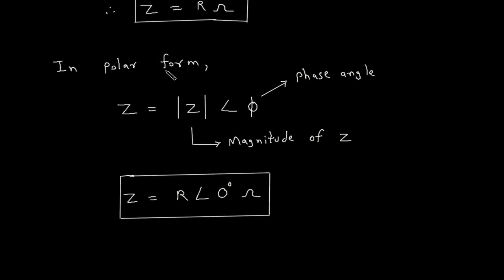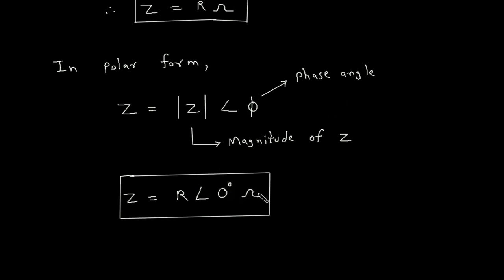Now in polar form, the equation is Z is equal to magnitude of Z at an angle phi, where phi is the phase angle and this is the magnitude of Z. We know that the magnitude of Z is simply R because the reactive part is 0. So Z is equal to R at an angle 0 degrees, and its unit is ohm.